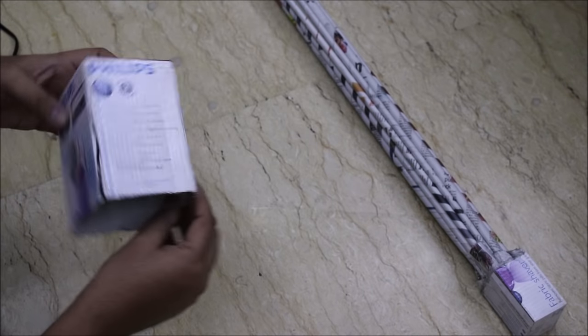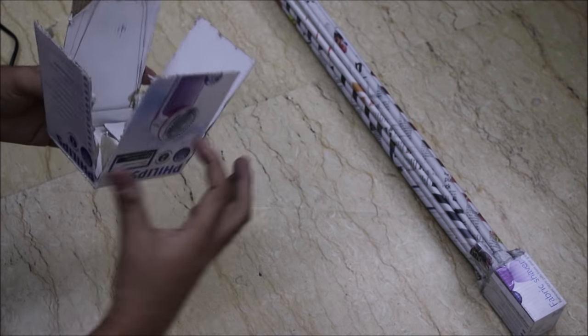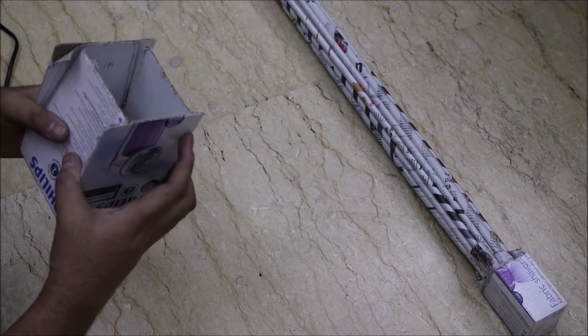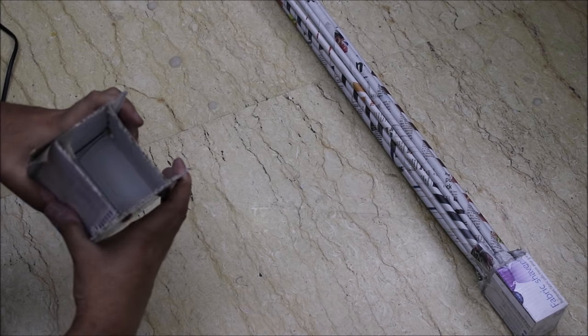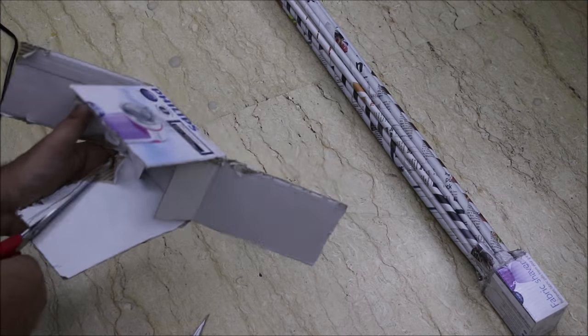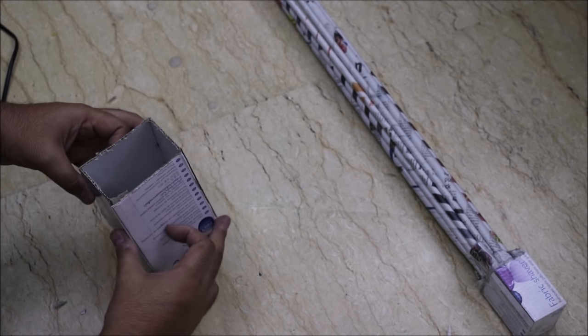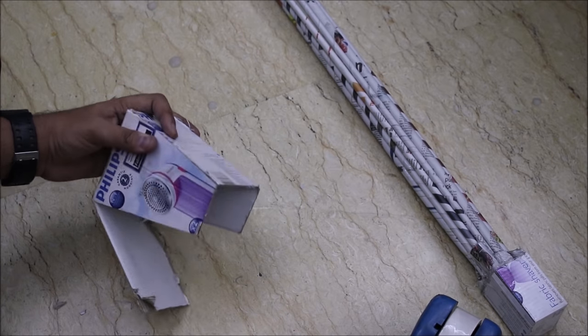We have taken another box and cut the edges. Now, we will put two edges in it and attach them. Now, there is something like this. Now, we will secure it with tape.